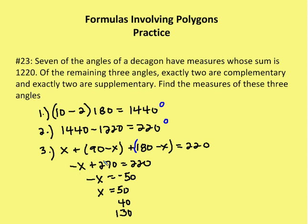Simplifying: negative 2x plus x gives me negative x. 90 plus 180 gives me 270. That equals 220 degrees. So negative x plus 270 equals 220. Subtracting 270 from both sides gives x equals 50. If x equals 50, then the angle that's complementary is 40 degrees, and the angle that's supplementary to 50 degrees is 130 degrees. So my three angles are 50, 40, and 130.